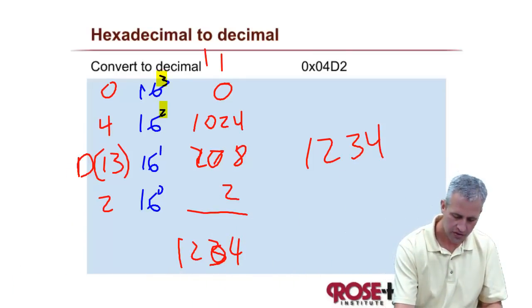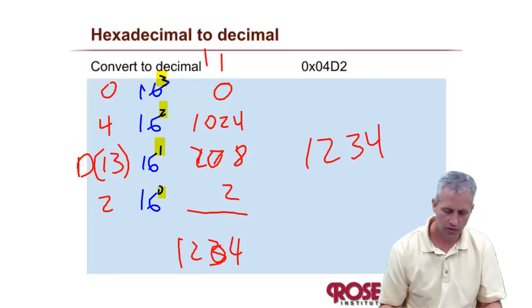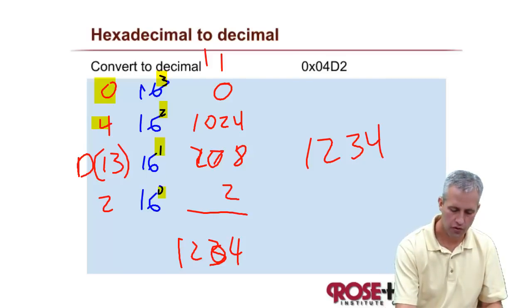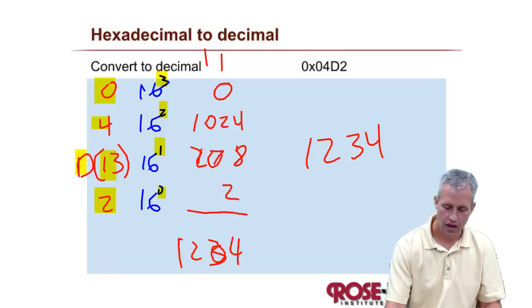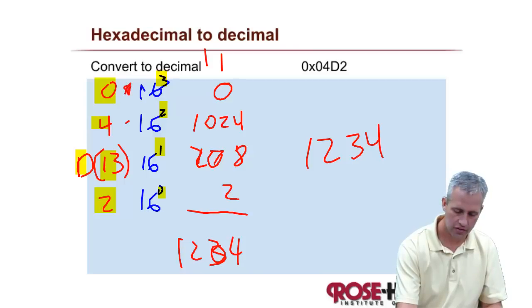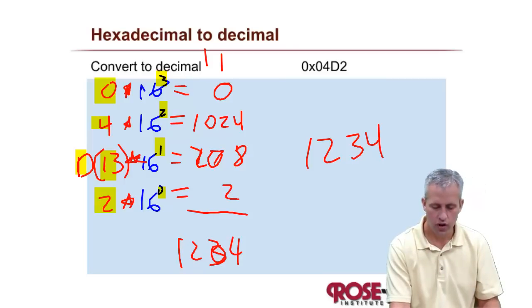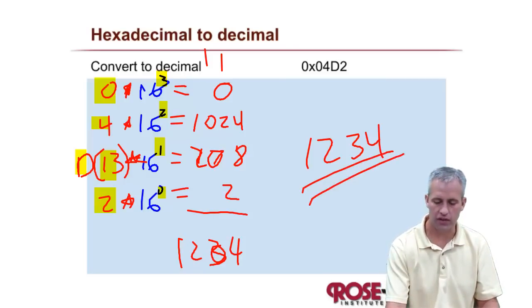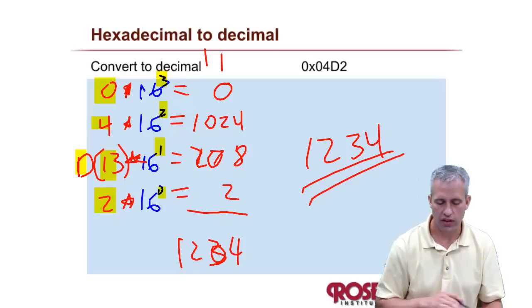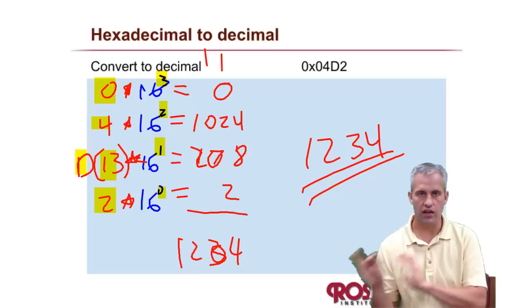So I eventually got through it after a couple math errors. So 16 to the third power, the first power, the zeroth power. Just copy your number over. 0, 4, D, and 2. D is just 13. And then you just multiply these as you come across. And you get 0, 1024, 208, which is the one I messed up the first time. And 2, add them all up, and you get 1234. So I tried to make it something that looked good when you finished. And so that's a conversion from hex into decimal.